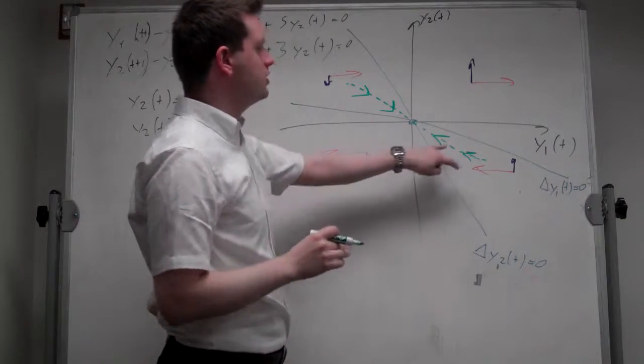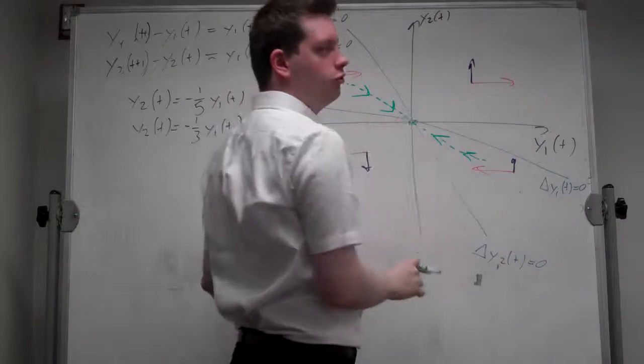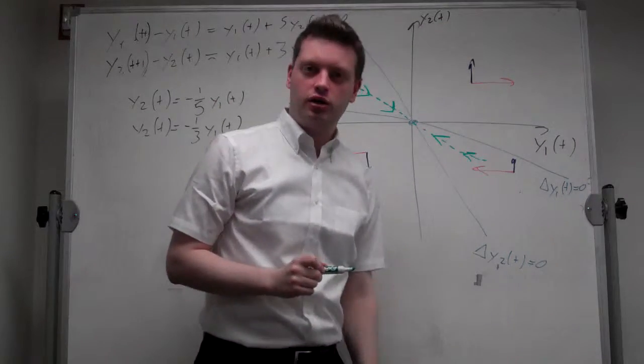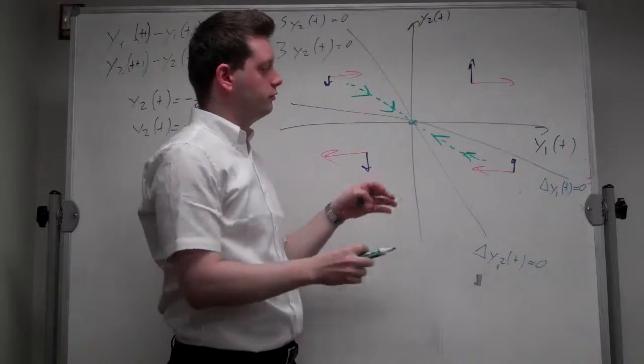So, except for this one line here, which is called the saddle path, along which it will converge to this stable point, it will explode.